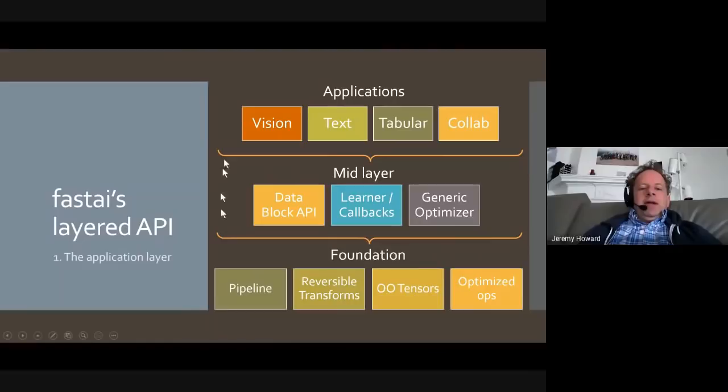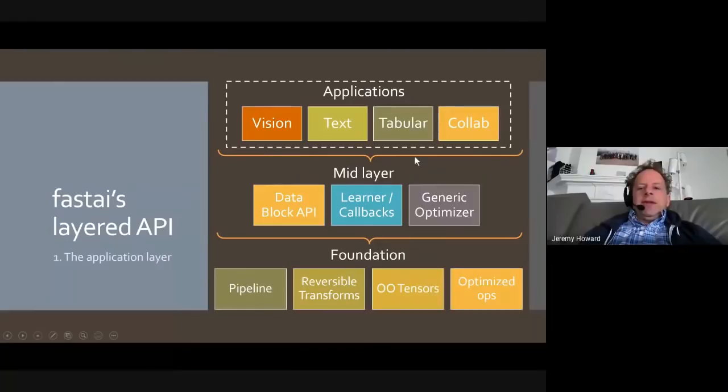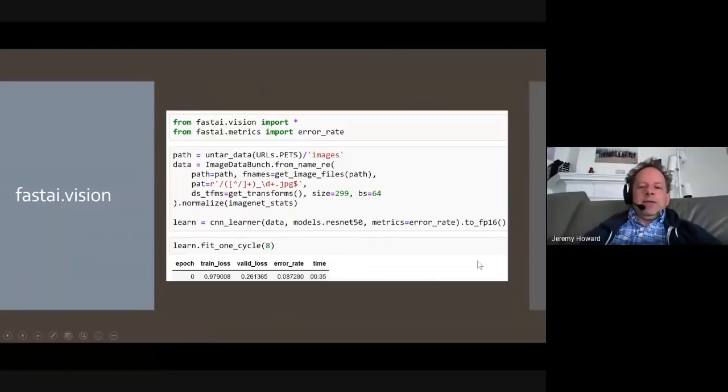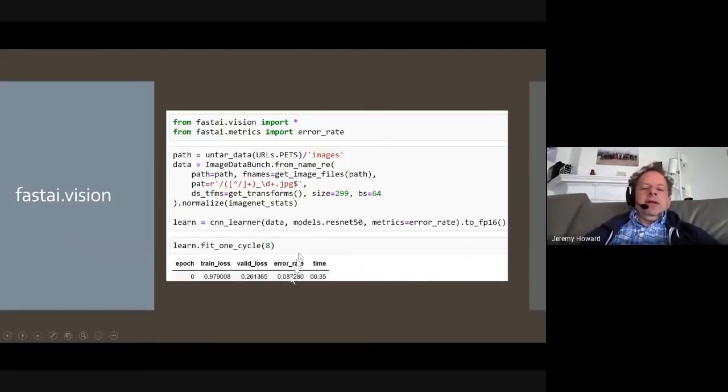So the layered API of FastAI v2 starts at the applications layer, which is where most beginners will start. And it looks a lot like FastAI v1, which is the released version of the software that people have seen before. But v2, everything is rewritten from scratch. It's totally new. There's no code borrowed. But the top-level API looks quite similar. The idea is that in one, two, three, four lines of code, you can create a state-of-the-art computer vision classifier, including transfer learning.